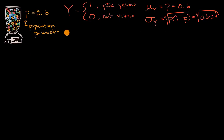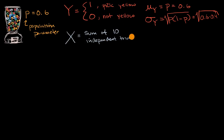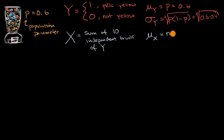But now let me define another random variable, X, which is equal to the sum of 10 independent trials of Y. This is a binomial random variable. The mean of this binomial random variable is just going to be equal to n times p — which in this particular situation is 10 times 0.6, equal to 6. That makes sense: if 60% of the balls are yellow and you take 10 trials, you'd expect six to be yellow.